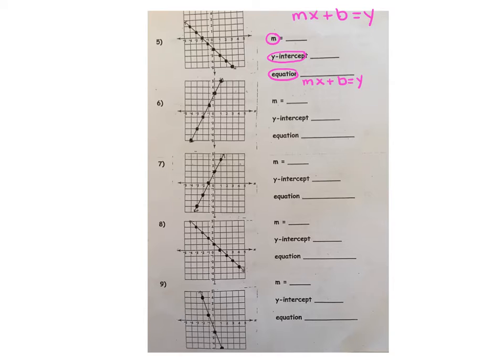Take a look at each line you've been given. Let's start with number five. As we look at this line, we notice, moving our eyes from left to right, that it is pitching downward, sloping downhill. This is going to have a negative slope.